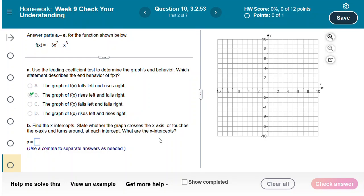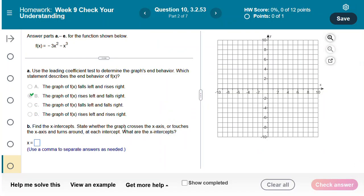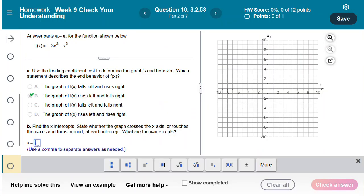Now we want to find the x-intercepts. I'm going to use my graph on Desmos and I can see that there's x-intercepts at 0 and at negative 3. We're going to use a comma to separate our answers.